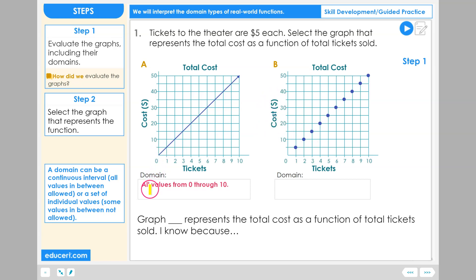The domain of graph A is all values from 0 through 10. We know this because we have a straight line. This straight line tells us that there is an output value for every input value, not just at the whole numbers like 1 and 2, but at 1 half and 1 and a half and 1.05. Any value between 0 through 10 is in the domain with this graph.